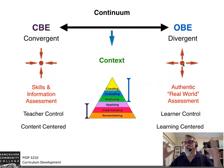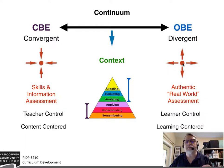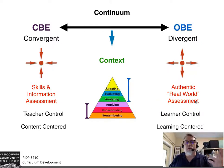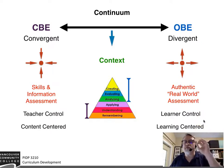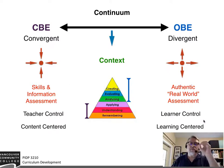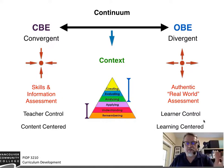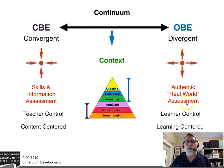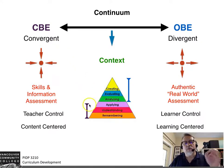In contrast, outcomes-based education is divergent. You start with an authentic real-world goal in mind — a real project — and you have an authentic real-world assessment. The learner has the opportunity to choose that project, and there's a fair amount of learner control. Many people would argue that outcomes-based education is learner-centered, as the learner does have control over many aspects of the environment, though the instructor still sets context.